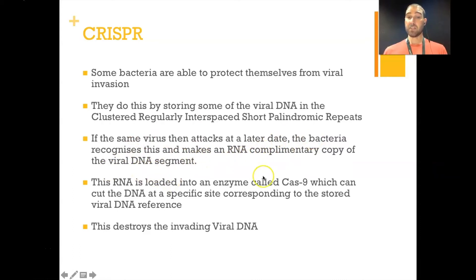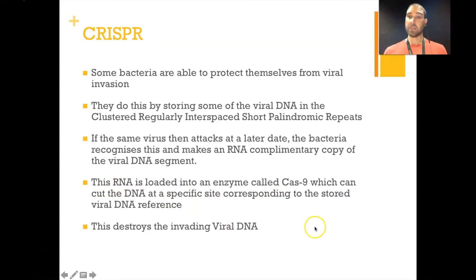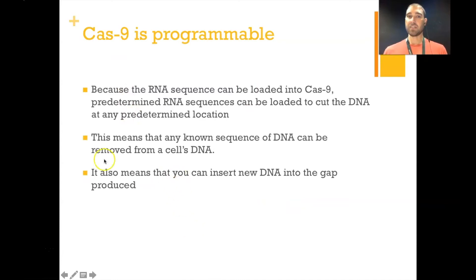That RNA complementary copy gets loaded into an enzyme called Cas9, and that cuts the DNA at a specific site corresponding to the stored viral reference. By having this enzyme cutting up the DNA present from the virus, the viral DNA can't be incorporated into the genome because it's already been cut up into lots of little bits. The RNA sequence that can be loaded into that enzyme — we can design that. We can make our own RNA sequence, which means we can cut the DNA at sections that correspond to the RNA sequence we insert into the Cas9 enzyme. The benefit is we can cut the DNA using any sequence we like at any particular point.